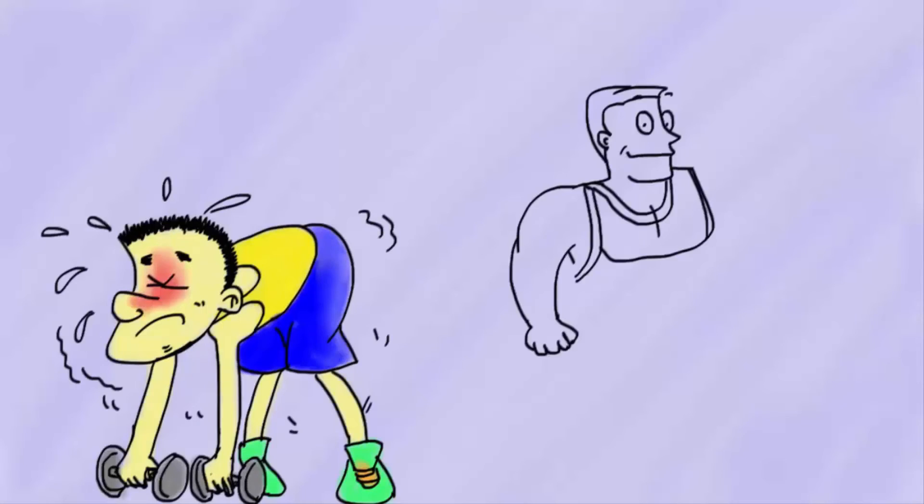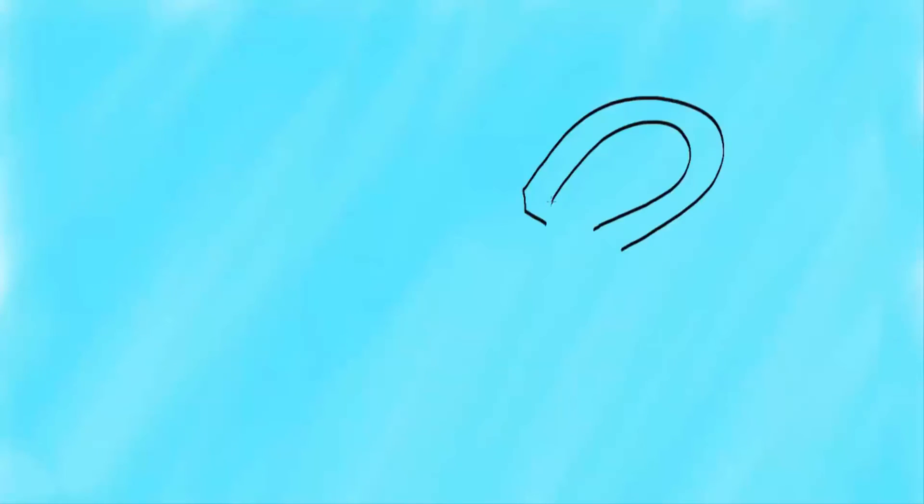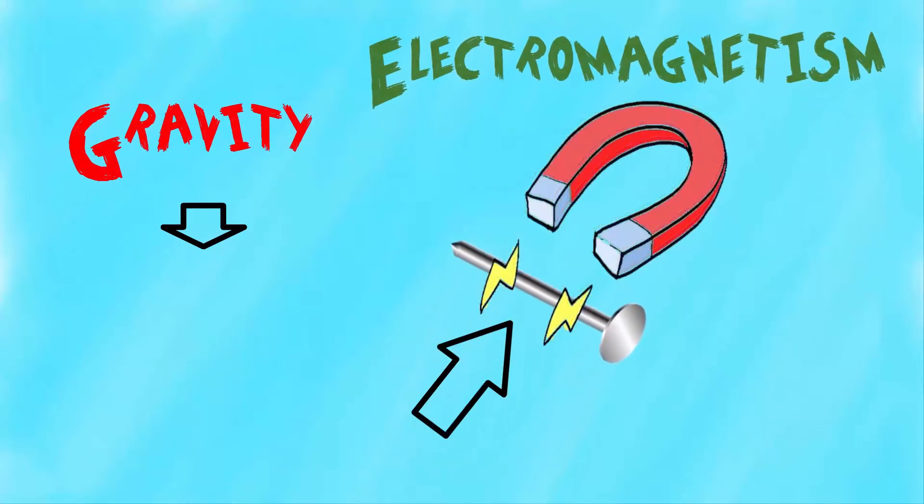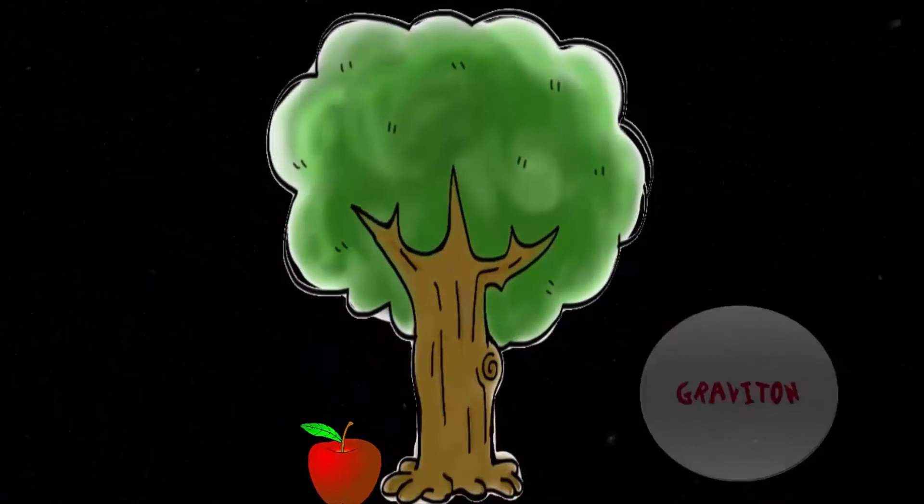String theory can also explain why gravity is weaker than electromagnetism. Try holding an electromagnet above a piece of metal. The metal will fly upwards towards the electromagnet. This is the thing that gravity is caused by particles called gravitons.